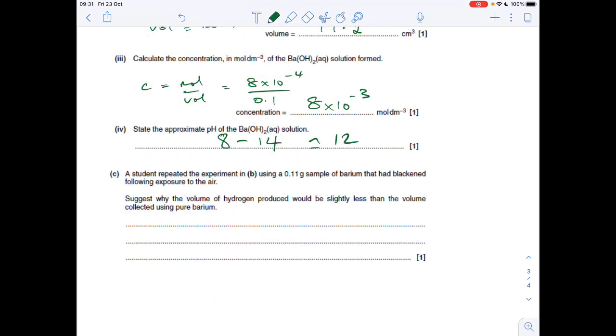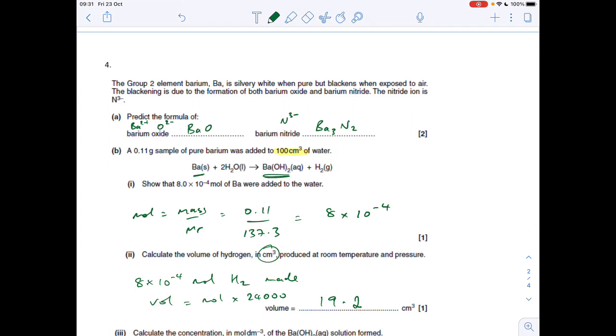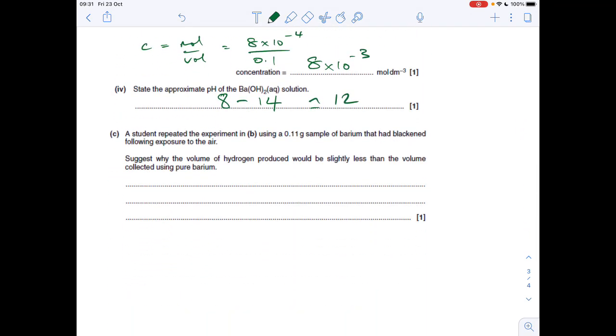Final part: the student repeats the experiment using 0.11 grams of barium that had blackened following exposure to air. Suggest why the volume of hydrogen is slightly less. Because it's blackened, it's due to the formation of both barium oxide and barium nitride. So we've got fewer moles of barium in that 0.11 gram sample, and so we're going to get fewer moles of hydrogen.